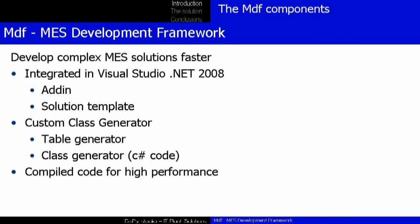The MDF library is integrated into the Visual Studio .NET 2008 IDE as an add-in and a C# project template. The main characteristic of the add-in is the CCG — Custom Class Generator. This tool, starting from the data configuration, generates a series of classes. The result will be only compiled code, which optimizes performance. The CCG tool also generates several custom tables to allow for a high-performance storage layer.